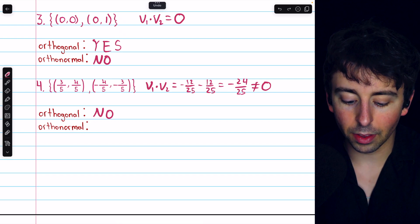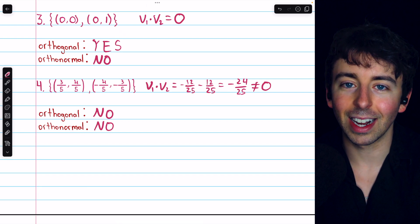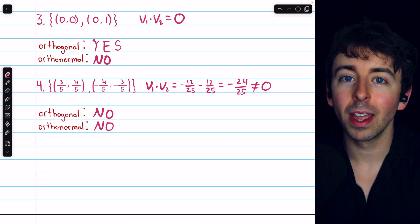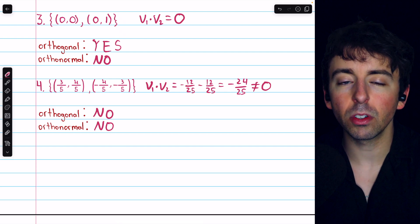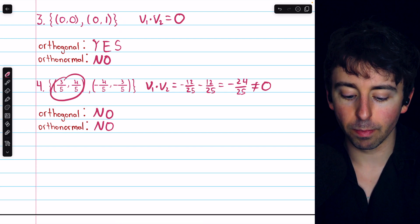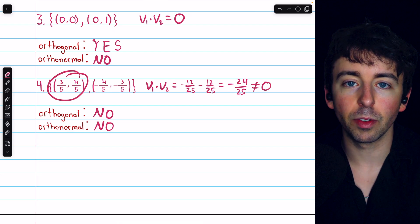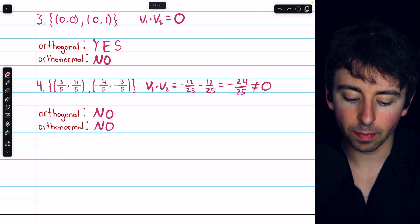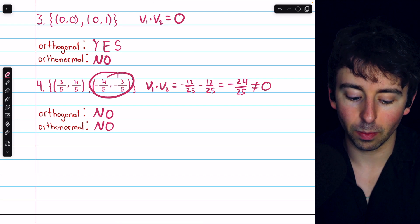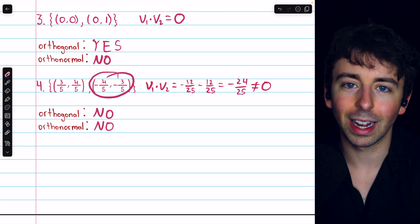Are they orthonormal? Well, no, because that requires orthogonality. So, they're not orthonormal. Although, if we computed their norms, we would get 1. They are both unit vectors. This would be the square root of 9 plus 16 over 25. So, root 1, which is 1. And this would be the same thing. So, they're not orthogonal, but they are unit vectors.